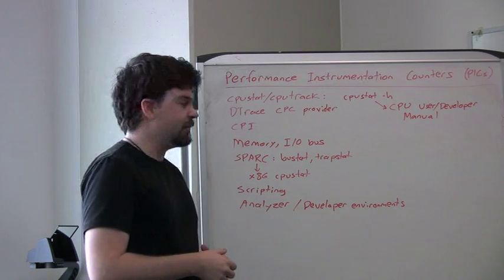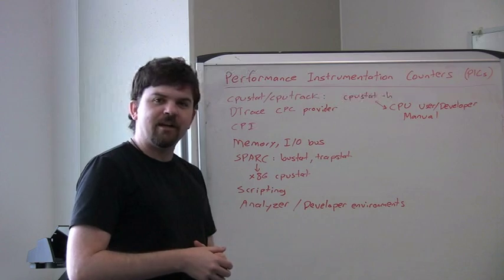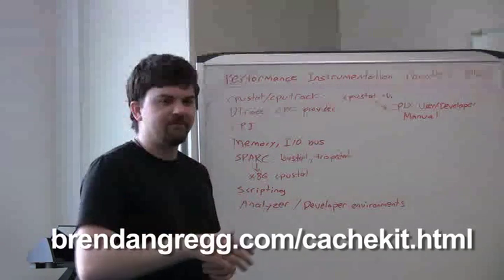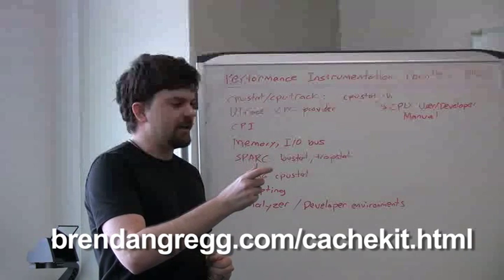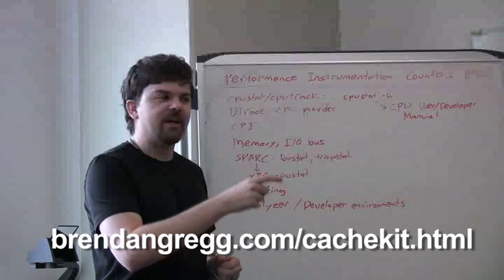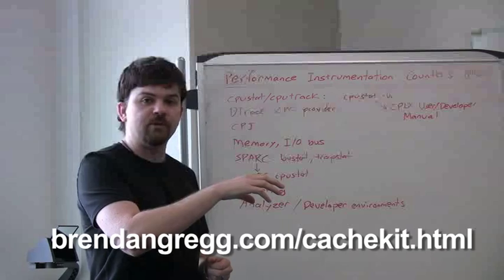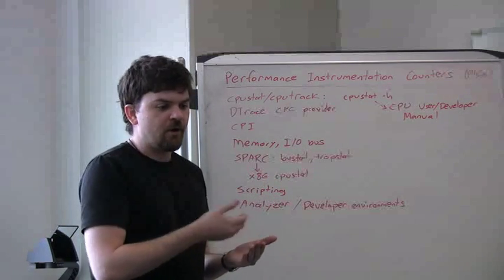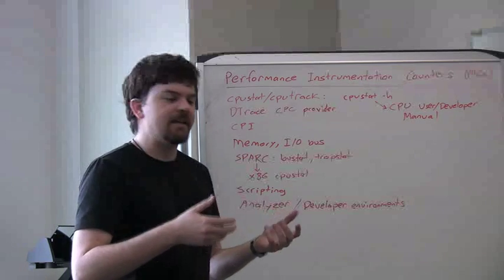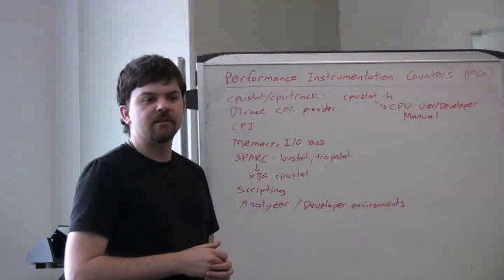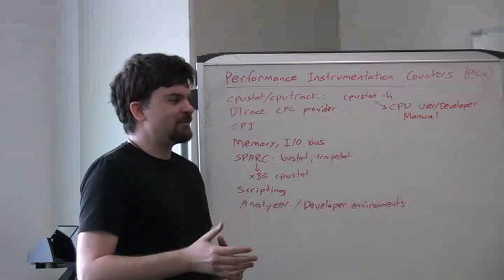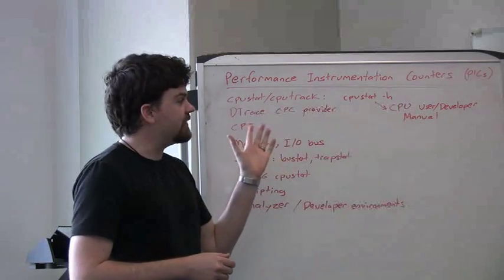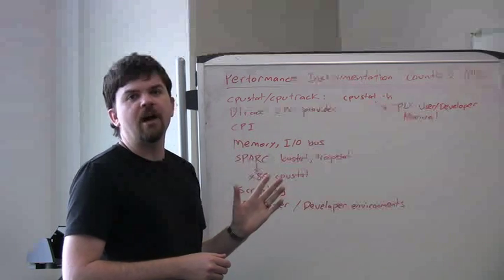I did take a swing a number of years ago at making this easier by writing a toolkit called the CacheKit. In the CacheKit, it's on my website, I wrote some Perl or awk programs to post-process the output of CPU counters, just to make it a bit more user-friendly. So you had some already cooked scripts to run and will give you various metrics of interest. But I haven't updated that for a while and there's been a lot of CPU revisions, and that's one of the difficulties - it's very dependent on the CPU type.